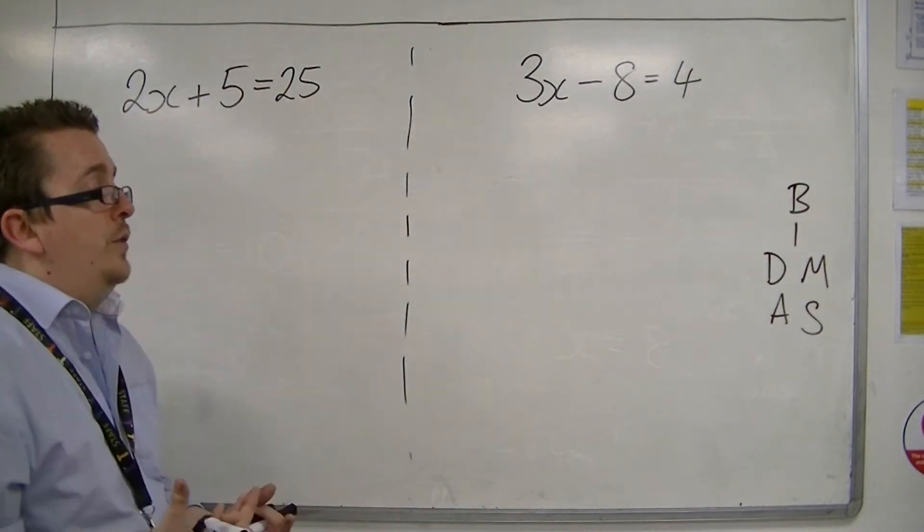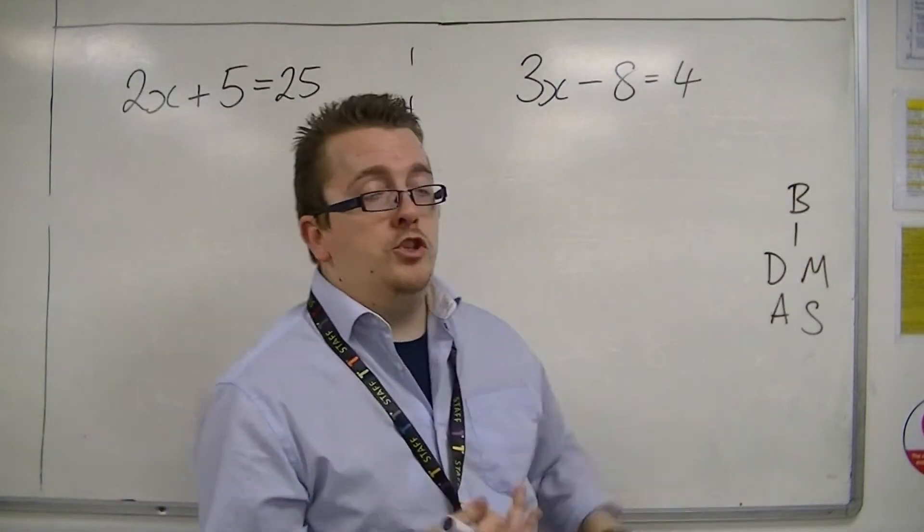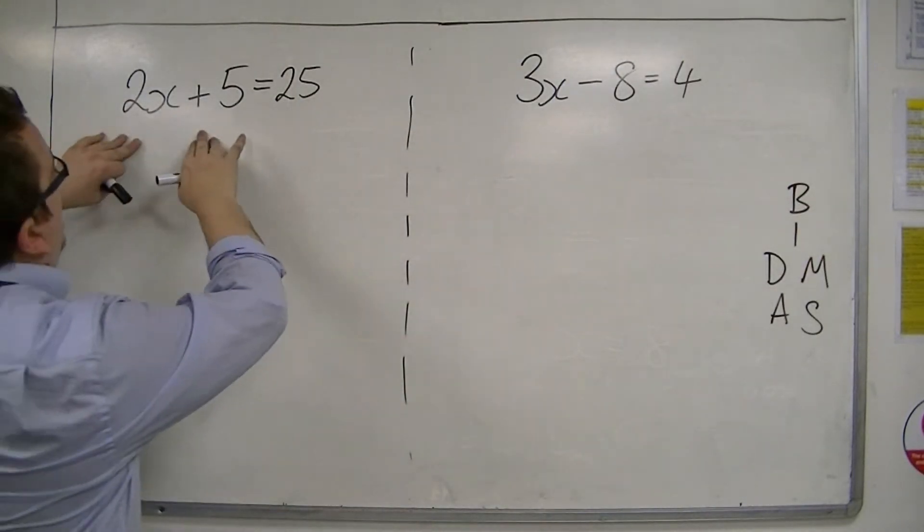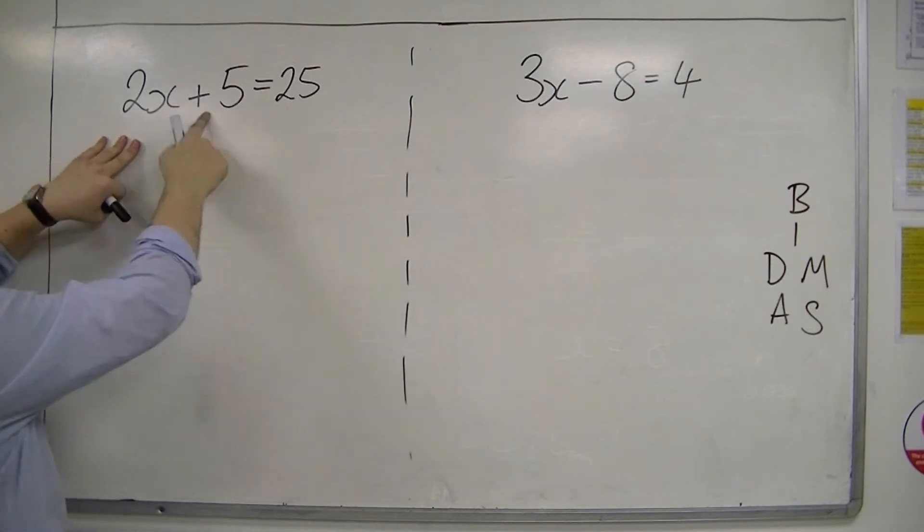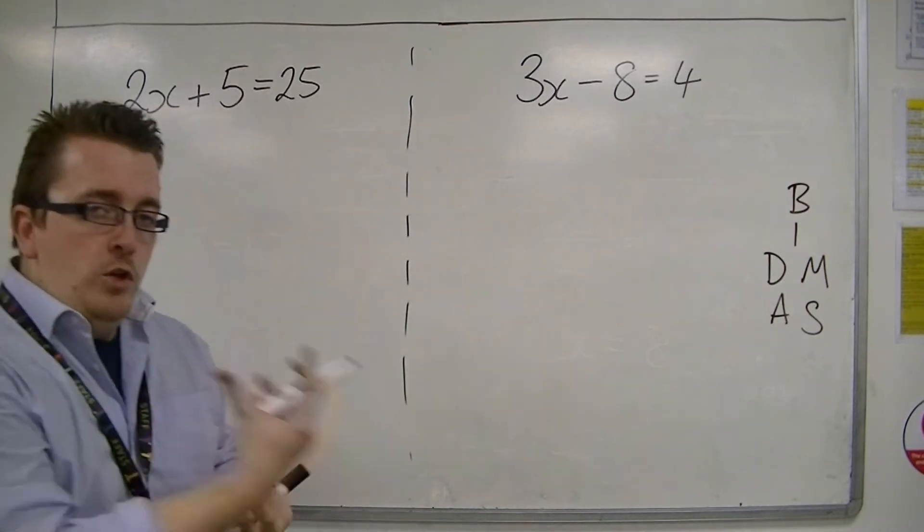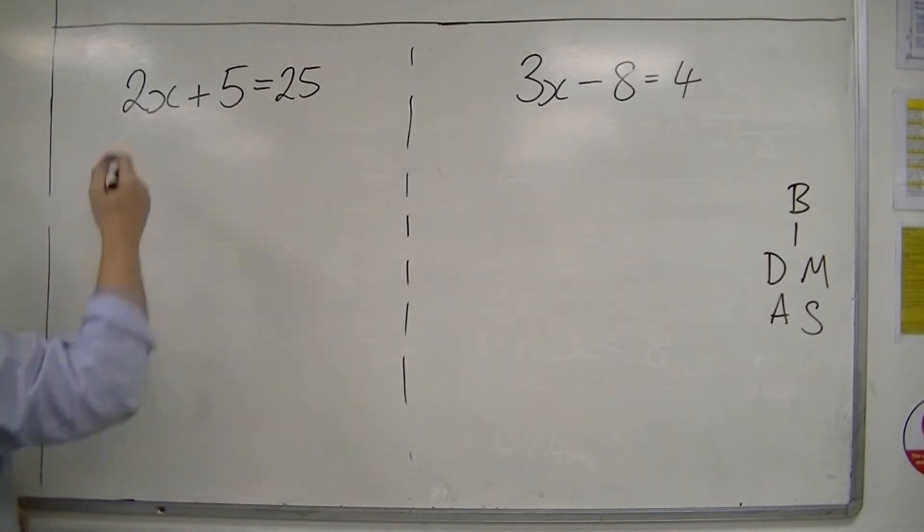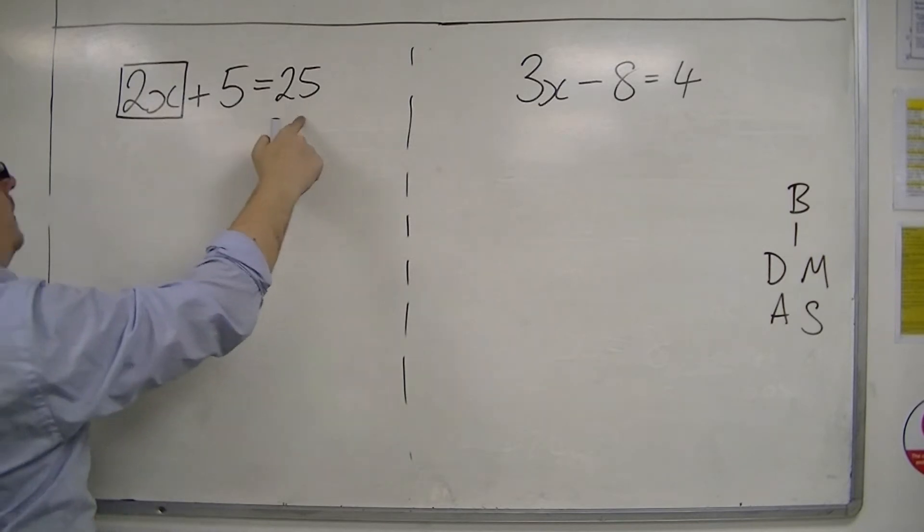If you're working backwards, you've first got to deal with the addition and subtraction that's there. And the first thing that I spot is that there is an addition, this plus 5. And what you want to do is you want to unravel it, so you want to make sure that what you're doing is starting off with something plus 5 is 25.